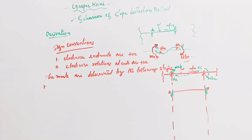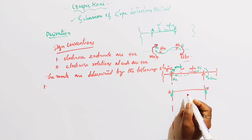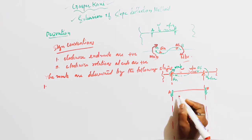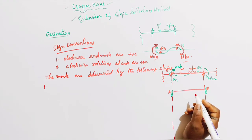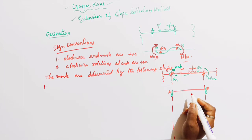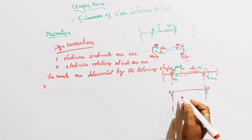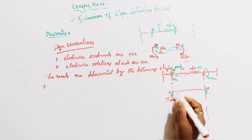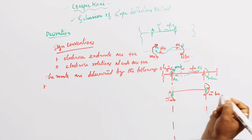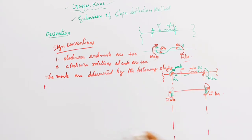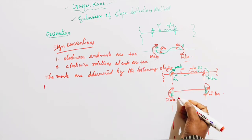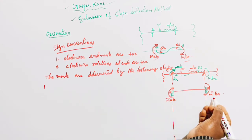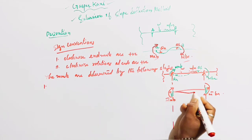In the slope deflection method, the first step is to consider ends A and B as fixed. Here in Kani's method also, we first consider ends A and B as fixed. Then find out the fixed end moments M̄AB and M̄BA.